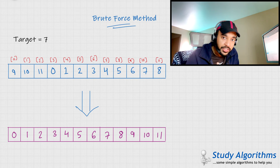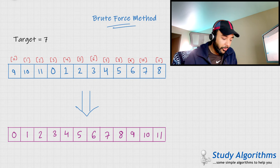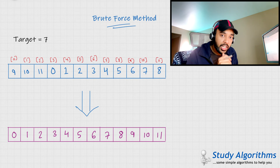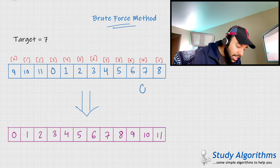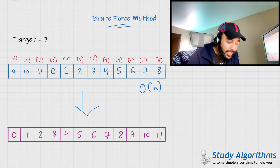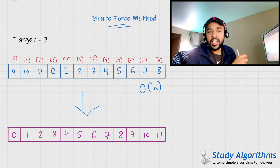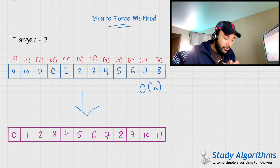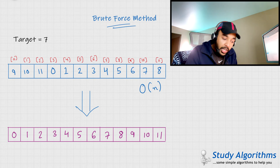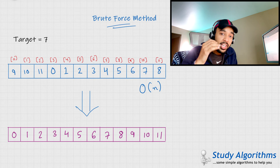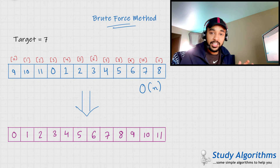But do you see the problem with this approach? You could say that you were able to find your number in order of log n because of binary search. But we are also un-rotating the array, and un-rotating the array takes up an order of n time. In this case, the actual time complexity of this solution turns out to be order of n. In that case, you might as well just do a linear search and iterate over the entire array — that would be the same. So intuitively, if your array is very large, your time will increase, and we are never taking any advantage of the fact that this array is already sorted. So what can we do about it?